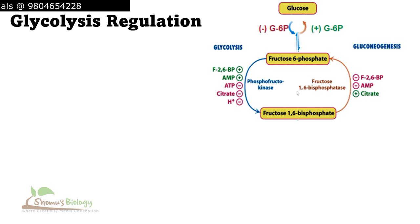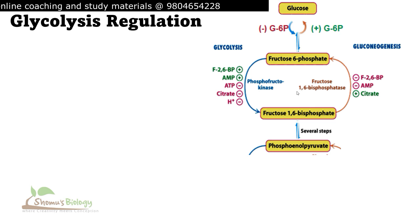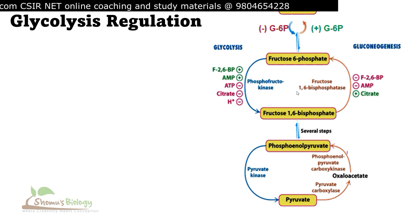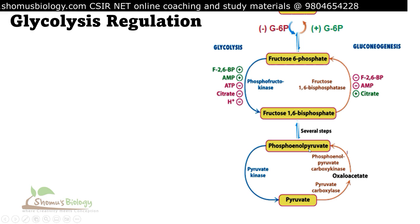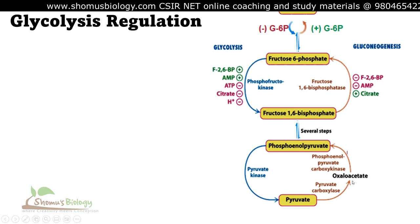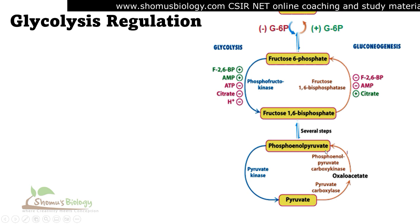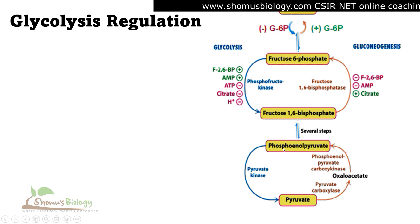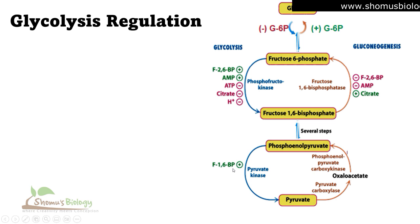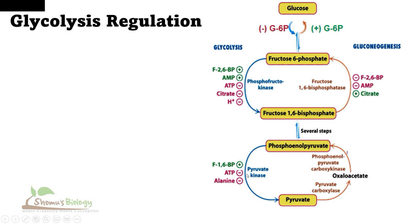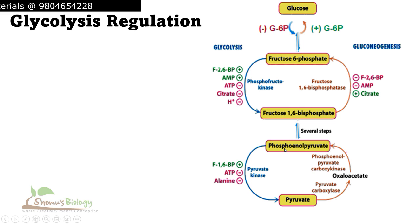After multiple interconversion stages, phosphoenolpyruvate (PEP) is produced. Phosphoenolpyruvate is converted to pyruvate by pyruvate kinase. Fructose-1,6-bisphosphate acts as a positive influencer here, as it is an upstream substrate element. ATP negatively influences this whole process, and alanine also negatively influences the conversion of phosphoenolpyruvate into pyruvate.